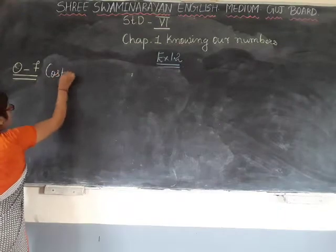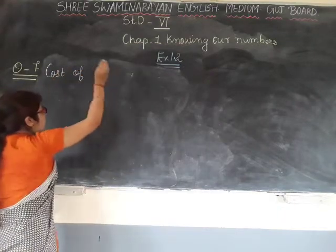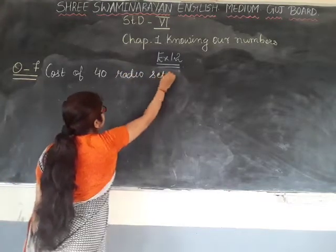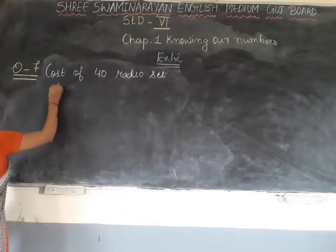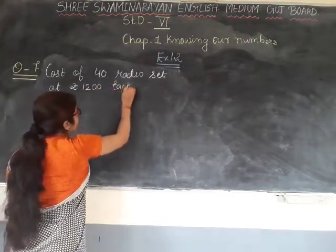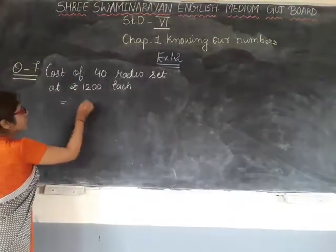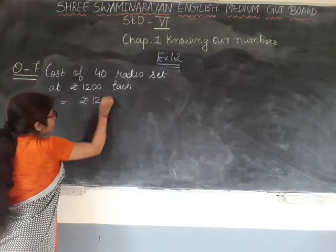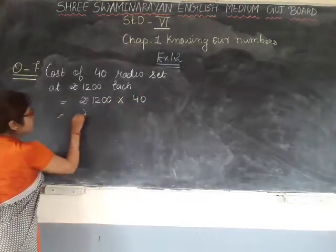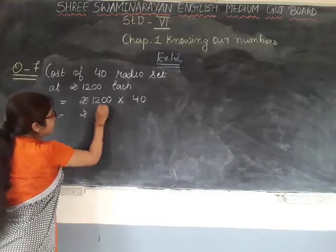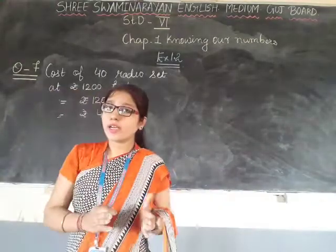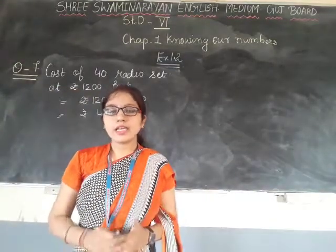Cost of 40 radio sets at rupees 1200 each. So, rupees 1200 multiplied by 40. The total is 48,000. That means the cost of 40 radio sets is 48,000 rupees.